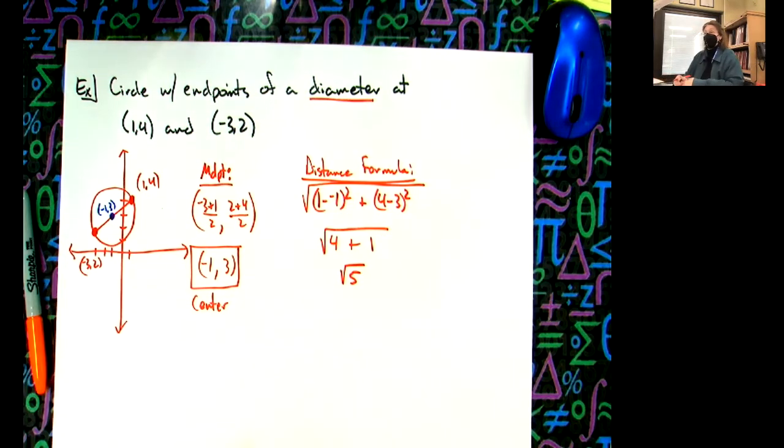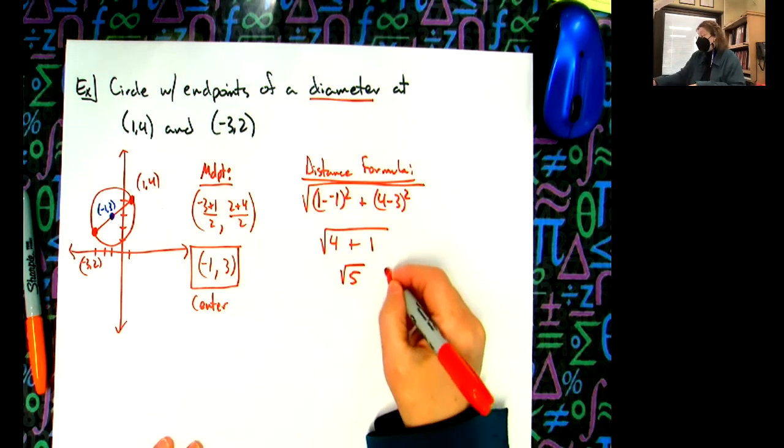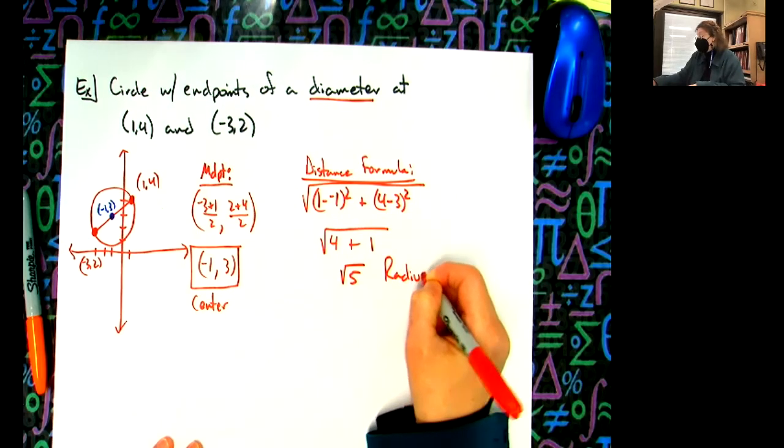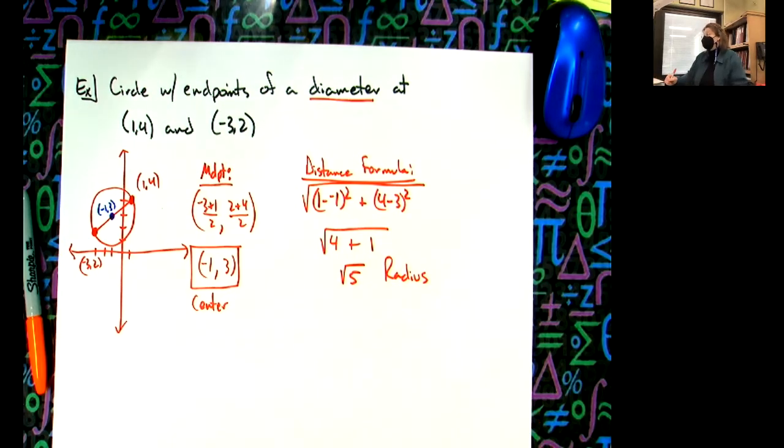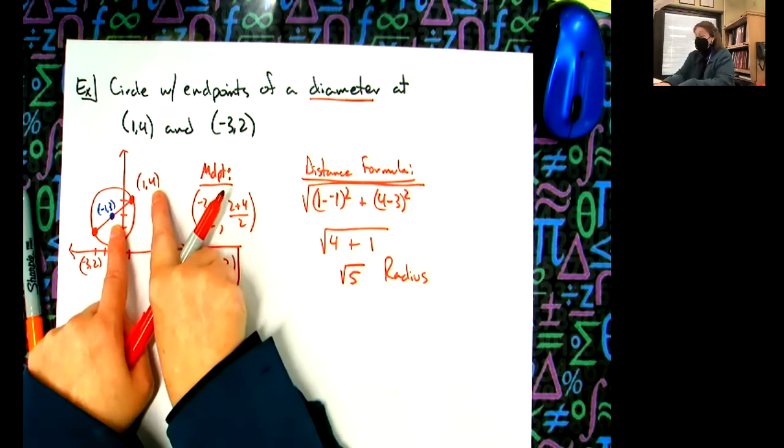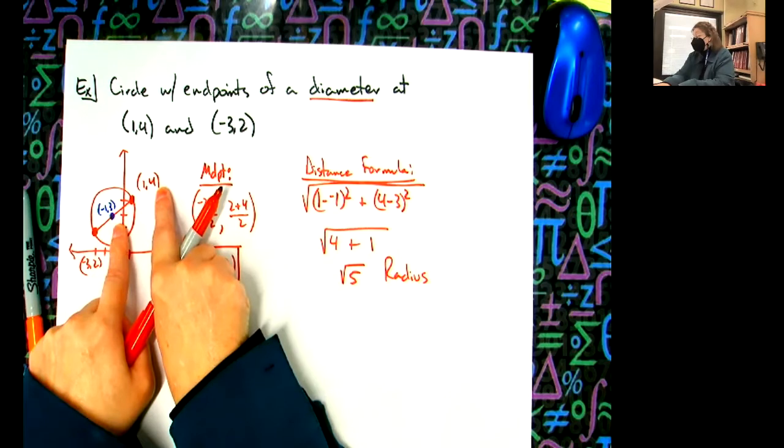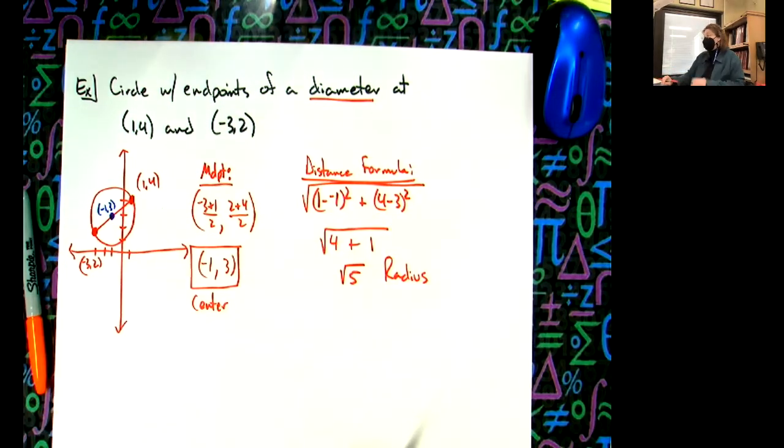Somebody check me. I don't care what two points you do, see if you get a radius of square root 5. I'm getting some head nods. Okay, I used these two points. I did (1-(-1)), I did (4-3)^2, added it, so I got a radius of square root 5.